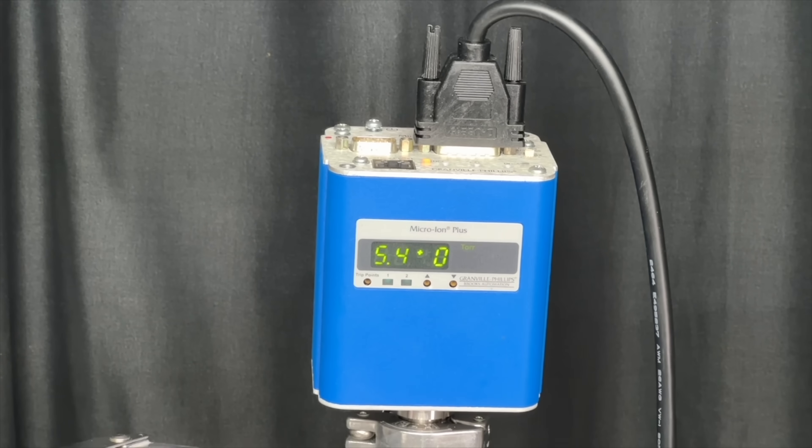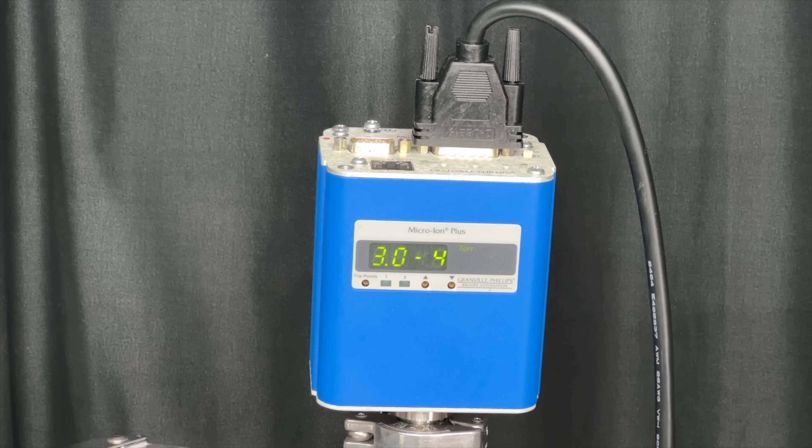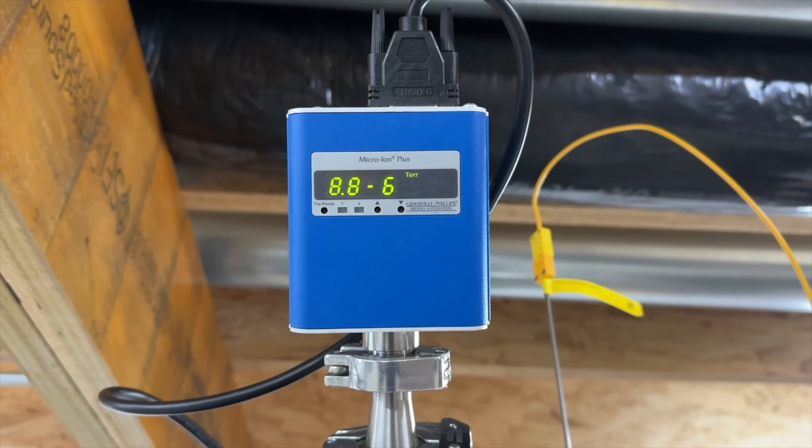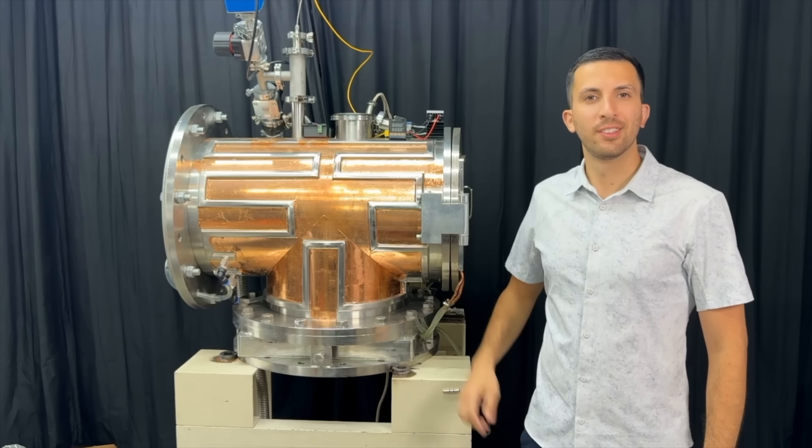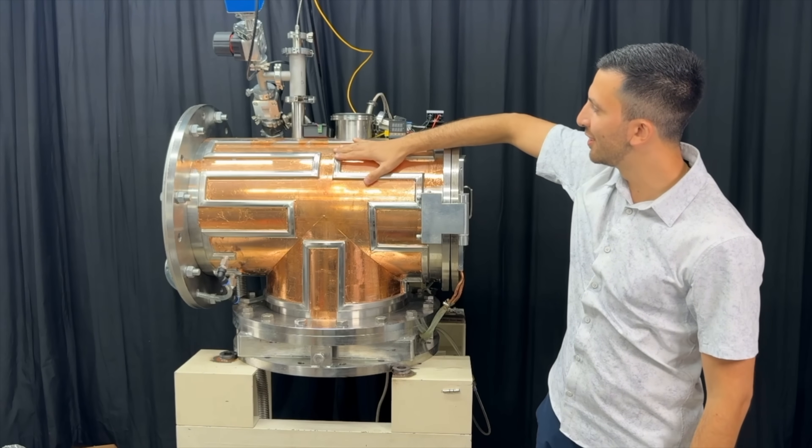We can see that if we start running it, we get to the negative four range really fast and after several hours, we get to the negative six range. Perfect! Step one of our project is done and we have an ultra high vacuum chamber.